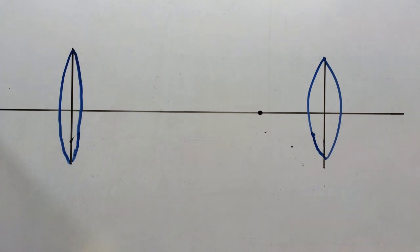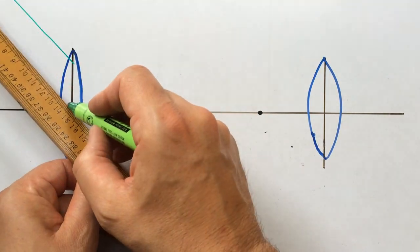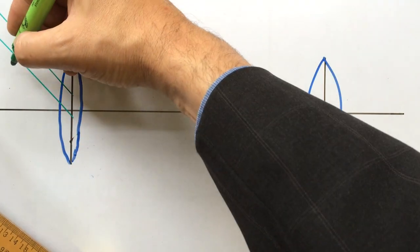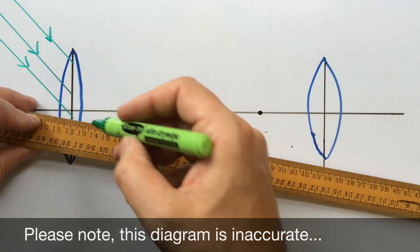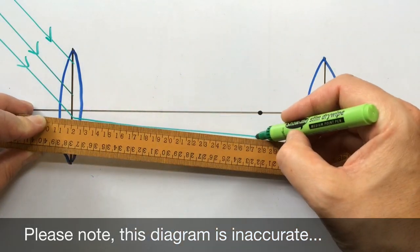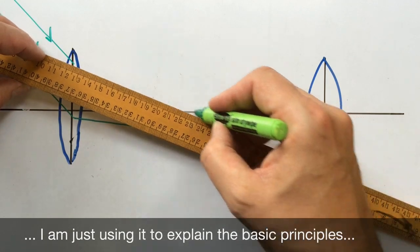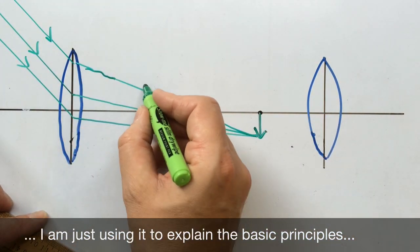Light hitting the objective lens from a distant object can be treated as though it consists of parallel rays of light. Now these rays will be focused, brought to a focus at a point near the focus of that lens. And hence the objective lens creates an image of the distant object at the focus.